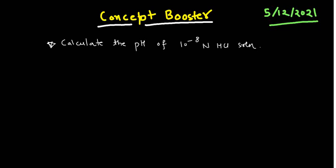Hello friends, welcome back to the tetrahedron chemistry classes. In today's class in the concept booster series, I am going to discuss a very important problem where you will calculate the pH of a solution which is having a very low concentration of the hydrogen ions. Today I am going to discuss this very important problem — calculate the pH of the 10 to the power minus 8 normal HCl solution.